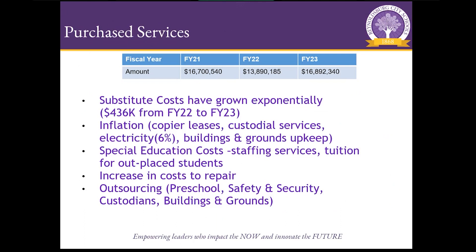Also, there's inflation. As consumers experience it, the district is also experiencing it — our copier leases are more expensive, custodial services, electricity — things that are not necessarily us consuming more, but just costing us more money to do the same things. Our buildings and grounds upkeep are contracted services with ABM, and things like electricity are third-party services.